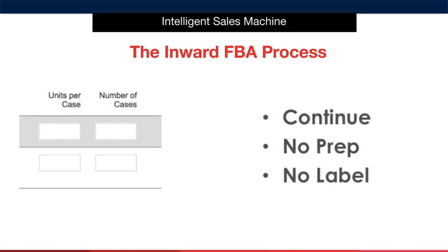You will then move into prep and label. As you have used your barcode when listing the product, it is very unlikely you will be required by Amazon to label your products. However, if you do, it is a very simple process of downloading the labels when prompted. If this occurs, a label must be placed over your existing barcode before the product goes to Amazon. Again, this is highly unlikely given that you have followed my process.